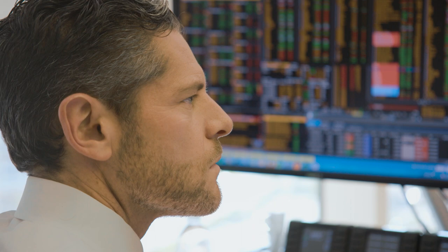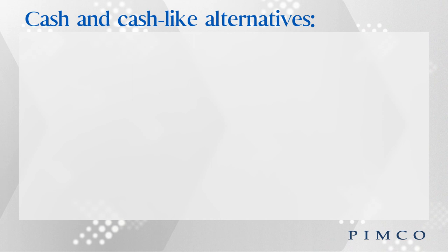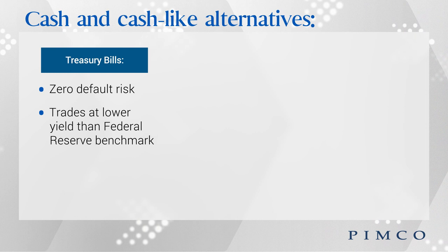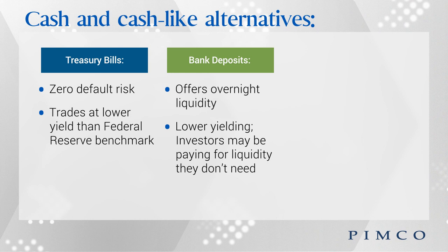Investors might be finally breathing a sigh of relief, specifically because yields have moved higher in recent months. While these yields are higher, and for the first time in many years, cash and cash-like alternatives are in fact producing returns and income for investors, there are increasingly apparent structural trades — a differentiation in yields amongst these strategies. Treasury bills, as an example, trade at a lower yield than even the Federal Reserve's benchmark rate. So you're paying a premium for owning a Treasury bill through a lower yield. Bank deposits, while offering overnight liquidity, are also suffering the same consequences of lower yield on average, as banks specifically do not need the liquidity.